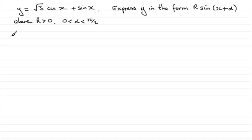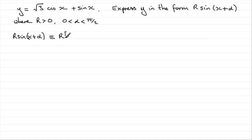So let's write r sine of x plus alpha down here. What we need to do is expand this by using the sine of a plus b formula, which you should be familiar with. We'll keep the r out here and put a square bracket, and when you expand sine of a plus b you get sine a cos b plus sine b cos a.